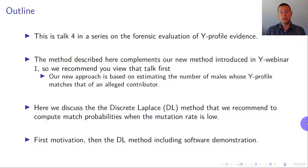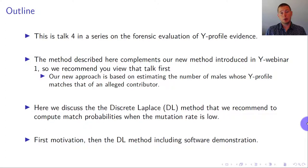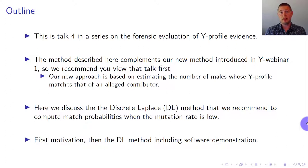That approach is based on estimating the number of males whose Y-profile matches that of an alleged contributor. In this talk, we discuss the discrete Laplace method, and we recommend it to compute match probabilities when the mutation rate is low. I'm first going to describe the discrete Laplace method, and then explain how to use the software that accompanies it. The work on discrete Laplace is done together with Paul Svander Eriksen from Aldo University and Nils Molling from University of Copenhagen back in 2013. All references mentioned will be given in the final slide.